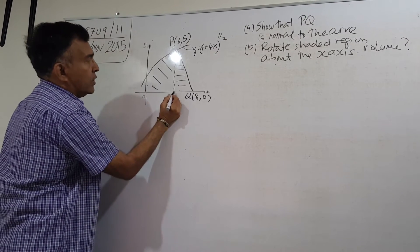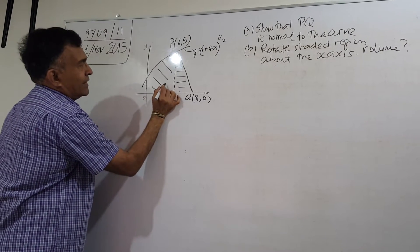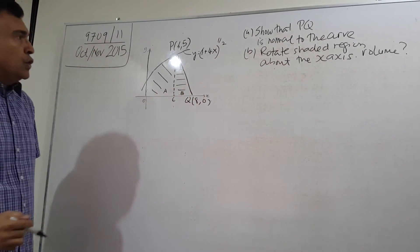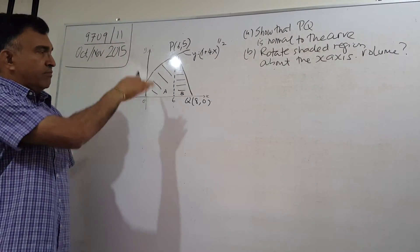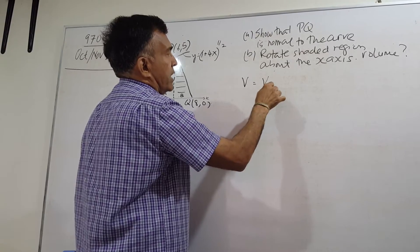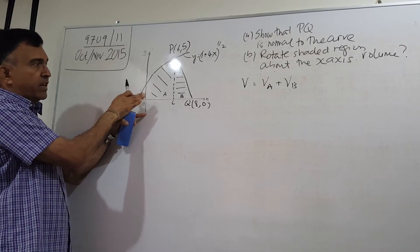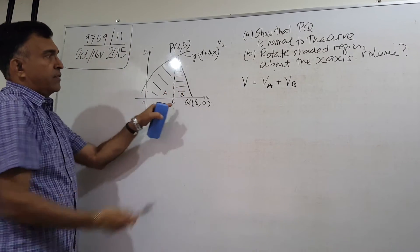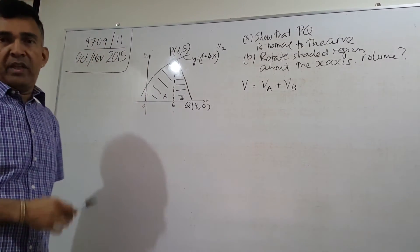Let's write down the coordinates. The x-axis here is 6. I'm going to call the region on the left as A, and this one as B. To evaluate the total volume generated when you rotate the shaded region about the x-axis, you can write it as V equals VA plus VB. You rotate region A above the x-axis to get VA, and region B to get VB — just add them up.